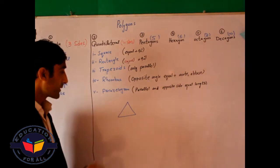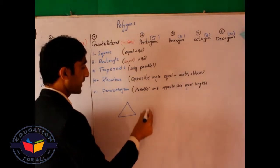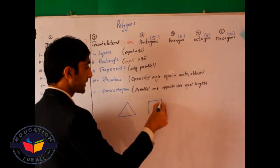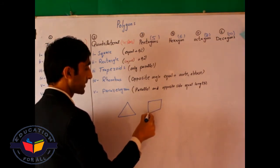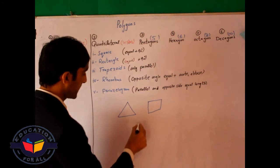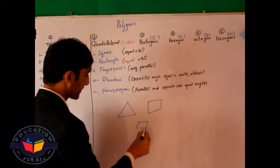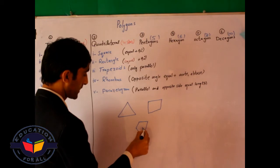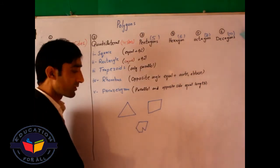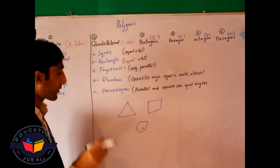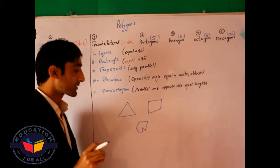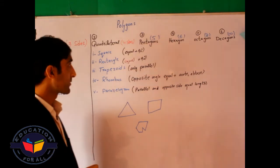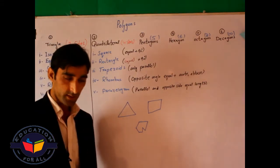So this is a closed figure. Another closed figure — like this one, and this one — these are also closed figures. All closed figures are called polygons. Next question: how many types of polygon are there?